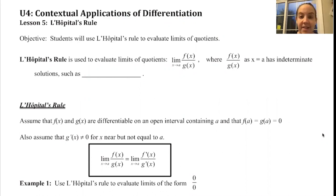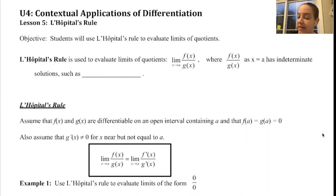So we're headed back to limits, that very first topic that we discussed together. L'Hopital's rule is used to evaluate limits of quotients, where we have the limit as x approaches a of f(x) over g(x), where f(x)/g(x) as x approaches a has an indeterminate solution, such as 0/0 or infinity over infinity.